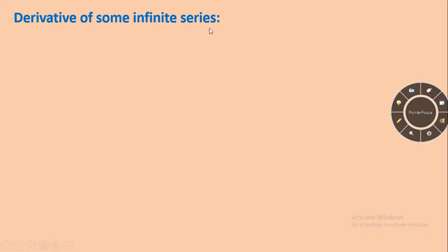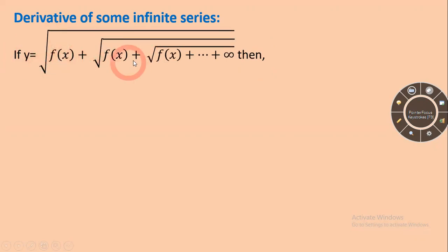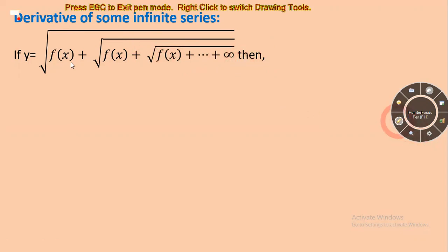First of all, derivatives of some infinite series. If we have a function y equal to square root of f(x) plus square root of f(x) plus square root of f(x) plus dot dot dot, this series goes up to infinity.